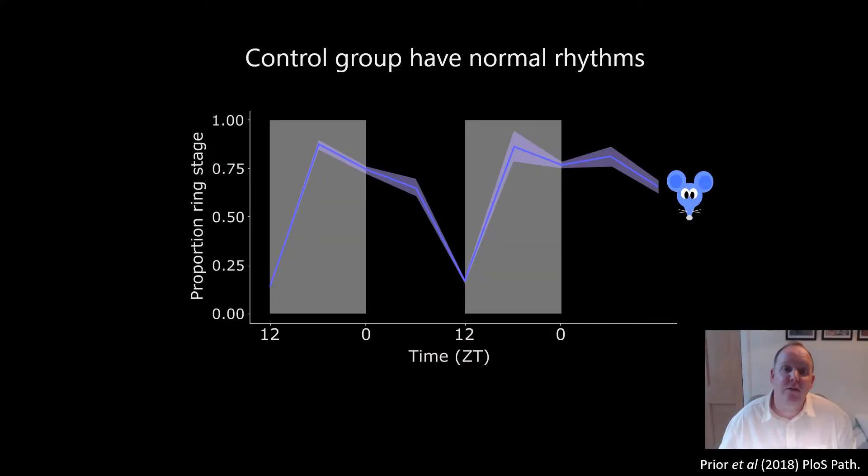So what do we find? Well, here's the results for the night fed group, which is a normal situation for a nocturnal mouse. The parasites are in the phase we'd expect, with ring stages, illustrated here, peaking at night.